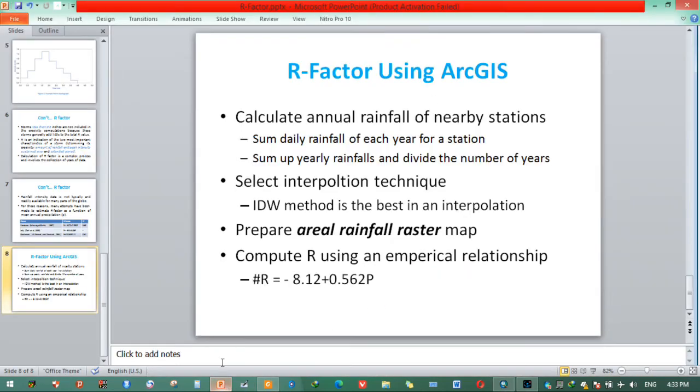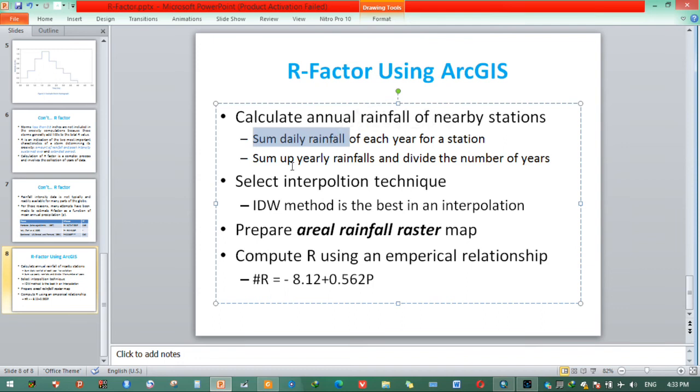The second step is I have already summed up daily rainfall. After that, mean annual rainfall is prepared by dividing by the total numbers of years. I need to select the best interpolation techniques. Open this one.